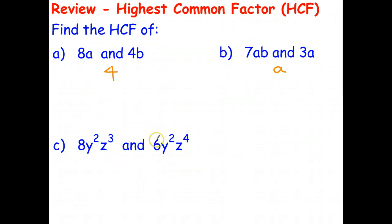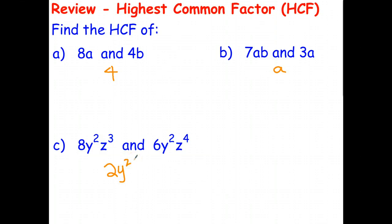For the last HCF question: the coefficients are 8 and 6, whose highest common factor is 2. Both terms have two factors of y, so y² is common. The first term has three factors of z, and the second has four factors of z, which includes three. So z³ is common to both. In general, the highest common factor of powers takes the smaller of the two — so the HCF is 2y²z³.